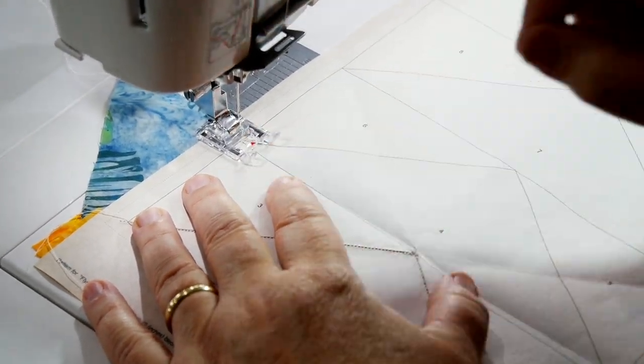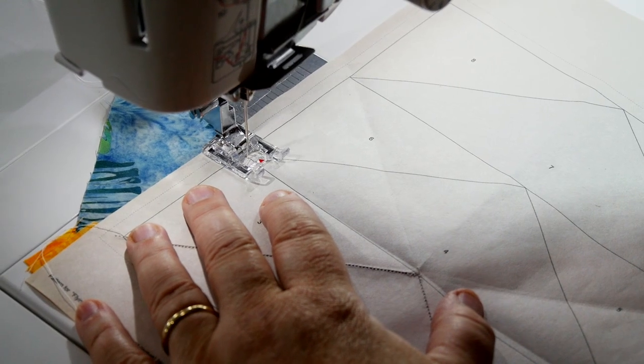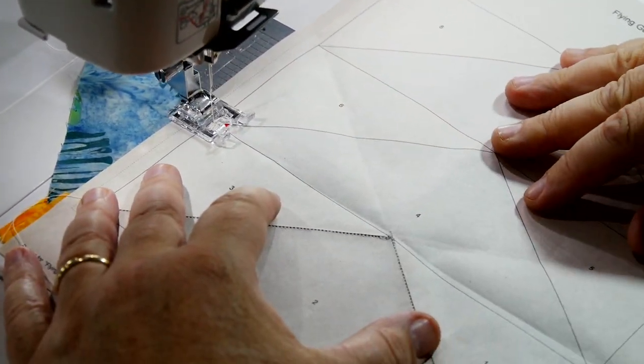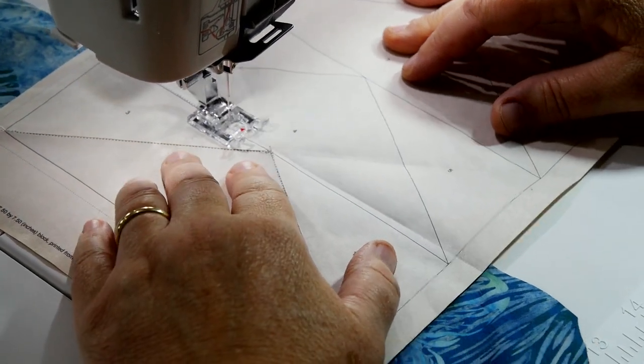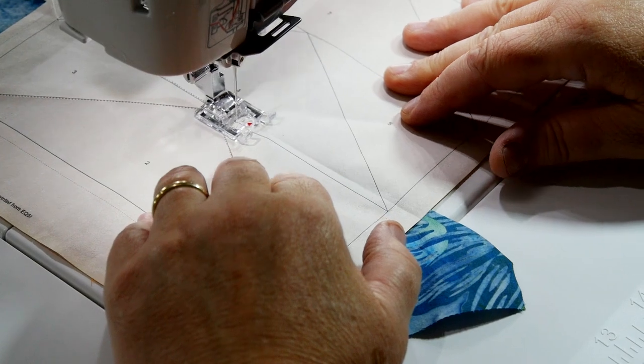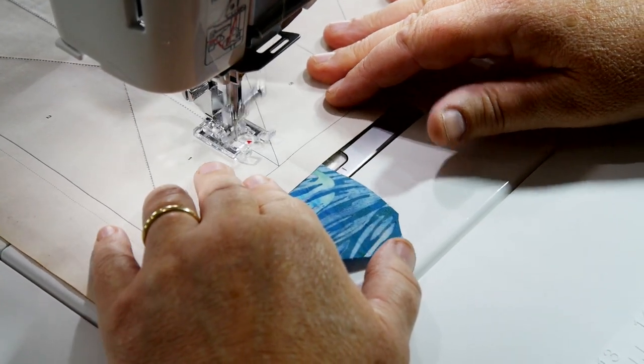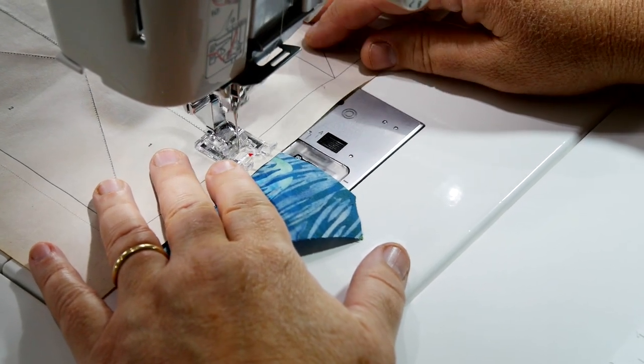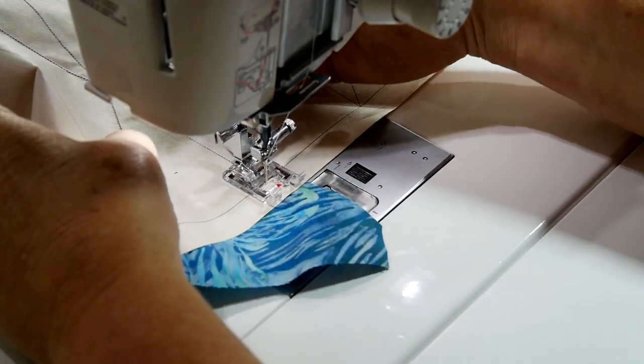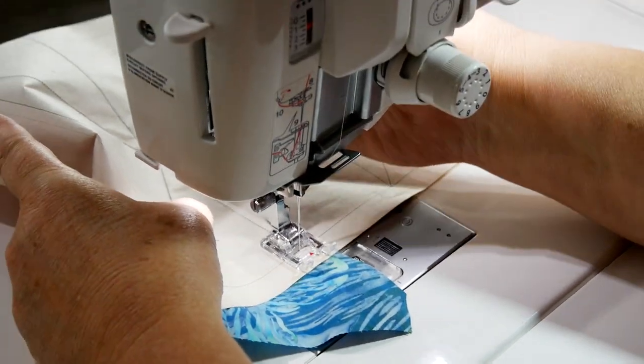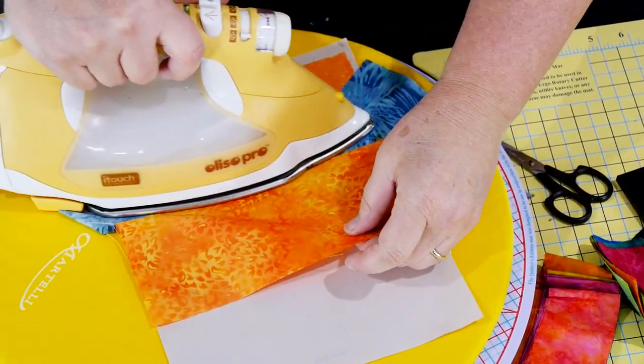I'm going to drop my needle down right on that line, right on the edge, and I'm going to sew about two stitches. Then I'm going to back up and lock my stitches in, and then sew right down that line. The reason why I lock my stitches is because I'm doing all this paper piecing, I don't want anything to come undone. Go right to the edge. So I've got to iron this. I'm going to lock my stitches in and iron this down.